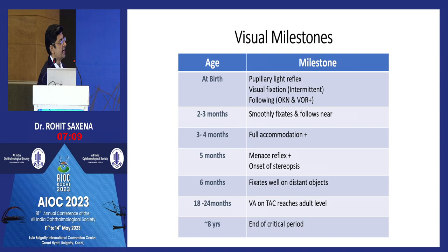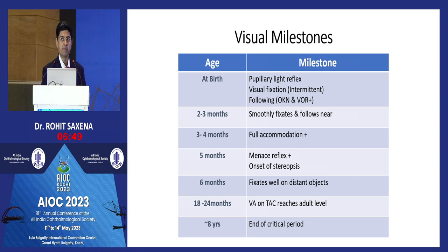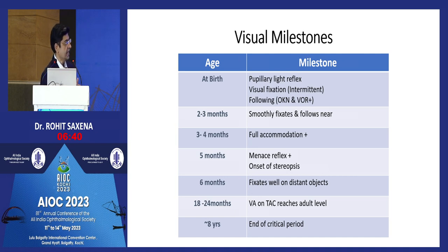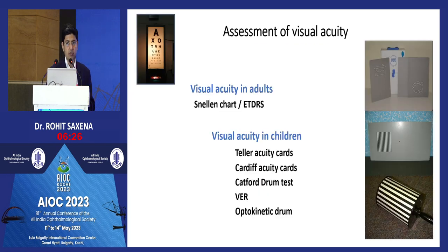Visual milestones are important. By two months, a child can fix and follow and has facial recognition of the mother — the social smile begins. By five months, onset of stereopsis occurs and binocularity develops; any misalignment from this point is significant. Although we used to say seven to eight years was the end of the critical period, the visual system actually develops beyond this, and amblyopia can be treated at much older ages.